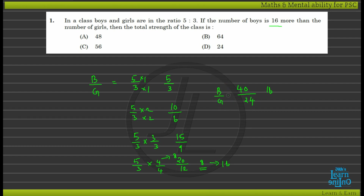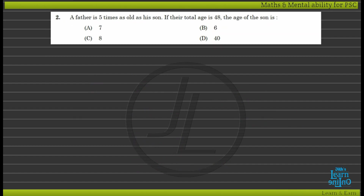The father is 5 times as old as his son. If the total age is 48, find the age of the son.